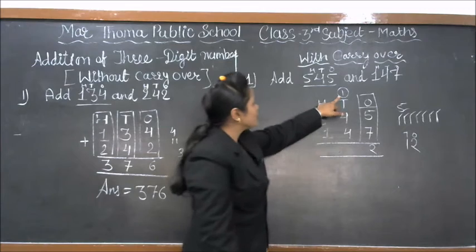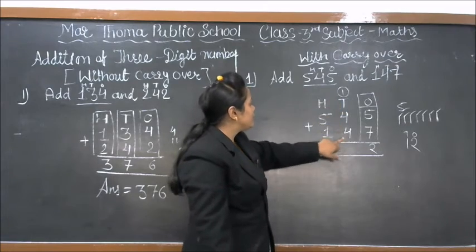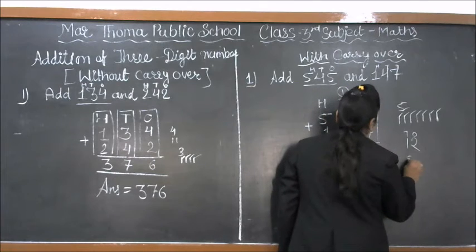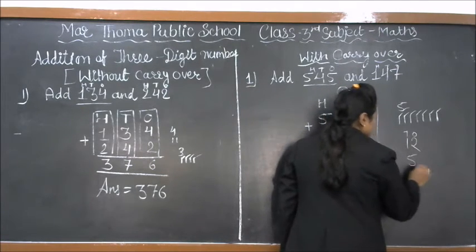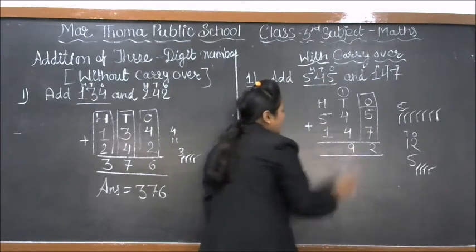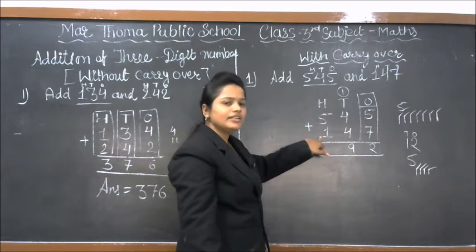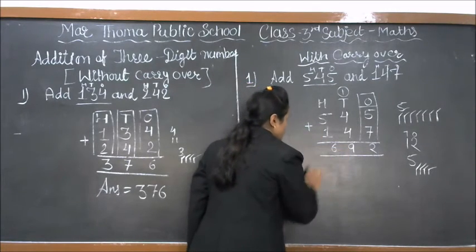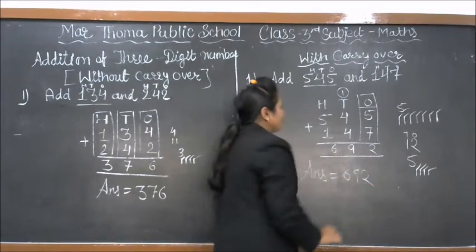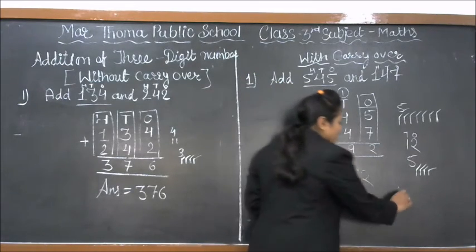Now with the carry over, we add the tens column: 4 plus 4 plus carry-over 1 equal to 9. The hundreds column: 5 plus 1 equal to 6. So we get the answer 692.